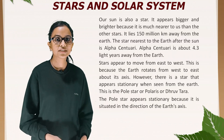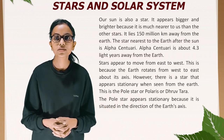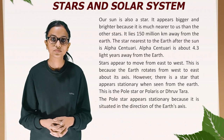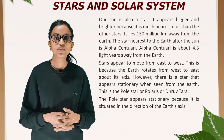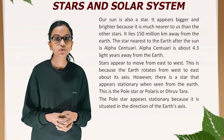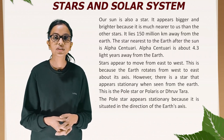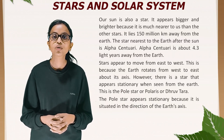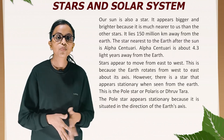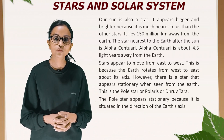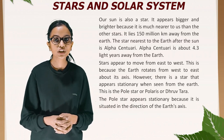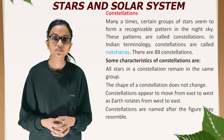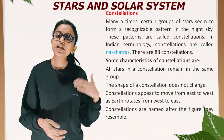The star nearest to the Earth after the Sun is Alpha Centauri, which is about 4.3 light years away. Stars appear to move from east to west because the Earth rotates from west to east about its axis. However, there is one star that appears stationary when seen from the Earth — the Pole Star, also called Polaris or Dhruvatara. The Pole Star appears stationary because it is situated in the direction of the Earth's axis.